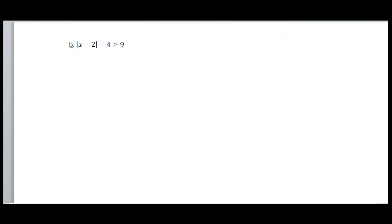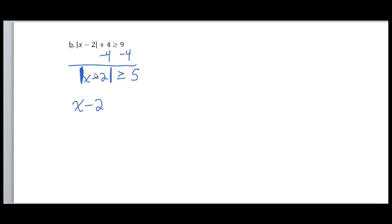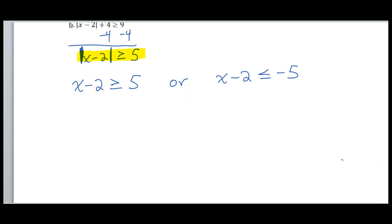Another example: absolute value of x minus 2, and then we add 4 to that, and we say that that's greater than or equal to 9. In this case, we have to isolate our absolute value. To isolate it, we subtract 4 from both sides. I have absolute value of x minus 2 is greater than or equal to 5. Now that I have this greater than or equal to, in order to remove those absolute values, I'm going to make it look almost exactly like it looks but without the absolute value. So x minus 2 is greater than or equal to 5. And to get my other inequality, I'm going to take x minus 2, flip my inequality symbol and change that positive 5 to a negative 5. And now I solve these two inequalities to figure out what x values are actually a solution.